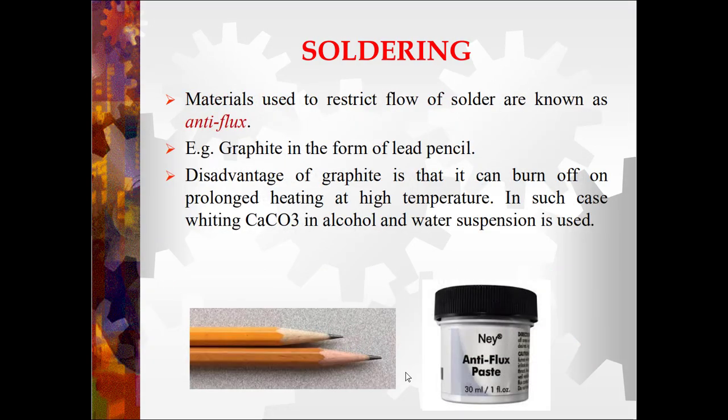Coming to anti-flux: these are materials used to restrict the flow of solder. It is applied on the specific area of the metal where the flux should flow, so it acts as a barrier — limiting the flow of flux or solder within its margins. For example, graphite in the form of a lead pencil. The disadvantage of graphite is that it can burn off on prolonged heating at high temperature. In such cases, whiting — calcium carbonate in alcohol and water suspension — can be used. Pre-mixed anti-flux pastes are also available.